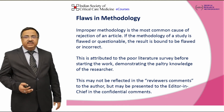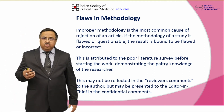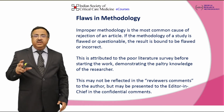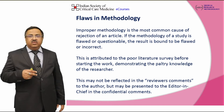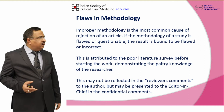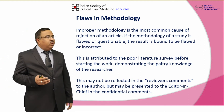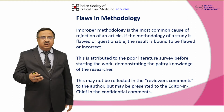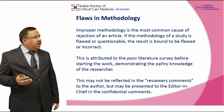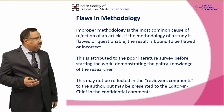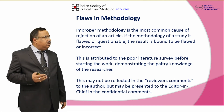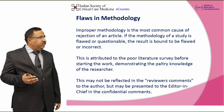Flaws in methodology are another important and one of the most common causes of rejection. If the methodology itself is not written properly, the results and outcomes will obviously be biased or will not come out in a proper manner. This is attributed to a poor literature survey — meaning the literature survey has not been done properly — and that demonstrates a limited knowledge of the researcher, which may be presented to the chief editor in reviewer comments.